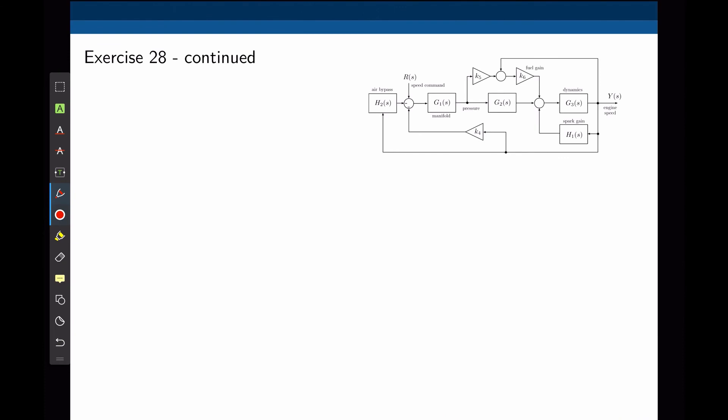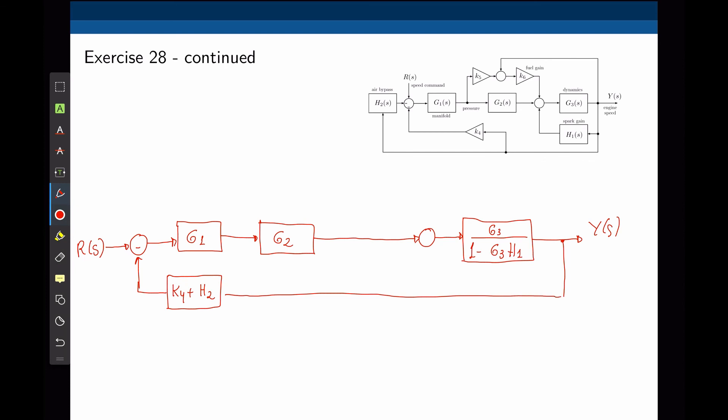Now let's rewrite this block diagram using the two simplifications that we identified, starting with R of S. R of S feeds a sum, and the input to that sum is K4 times H2, one of the simplifications we did in the last slide. The output here goes to G1, the output of G1 goes to G2, and the output of G2 goes to a sum. The output of the sum is the simplification of G3 and H1, which is G3 divided by 1 minus G3H1. This is Y of S, which is the signal needed in this block.